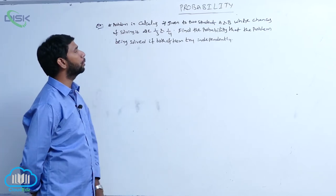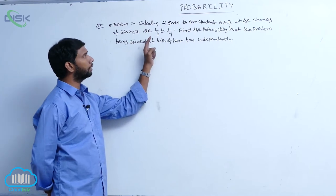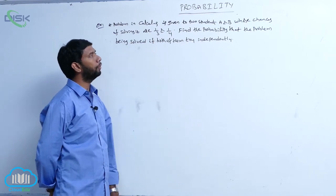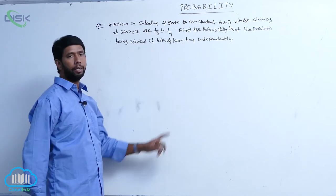A problem in calculus is given to two students, capital A and capital B, whose chances of solving it are 1 by 3 and 1 by 4. Find the probability that the problem being solved if both of them try independently.